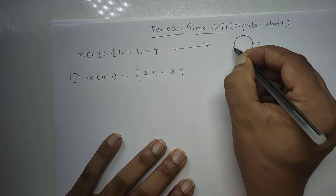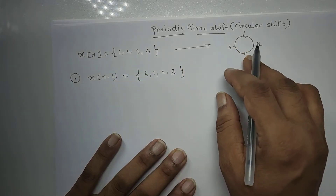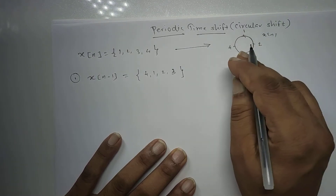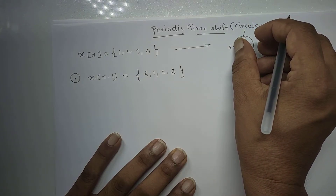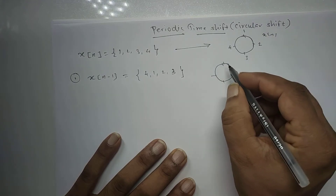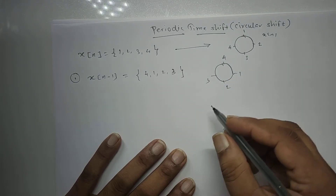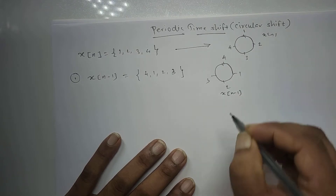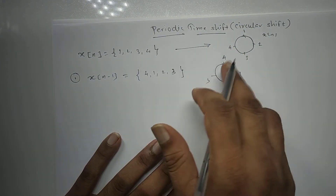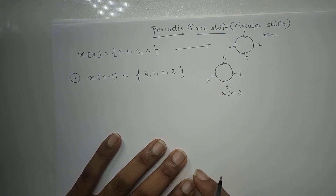For x[n-1], we rotate the circle clockwise by one position. After clockwise rotation by 1, the value 4 comes to the starting position, giving us {4, 1, 2, 3}. Reading the circle after rotation gives x[n-1] = {4, 1, 2, 3}. This clockwise or anti-clockwise rotation is why it is called circular shift.